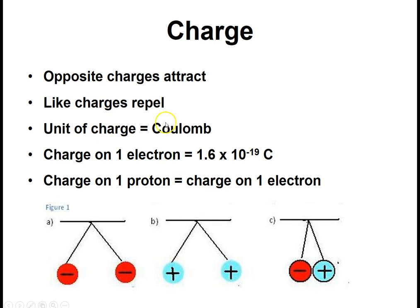The unit of charge we use is called the Coulomb. And the charge on one electron is 1.6 times 10 to the negative 19 Coulombs. Notice the number is very small. Protons have the same exact charge as an electron. So even though protons are much larger in mass, the actual charge itself is equal.